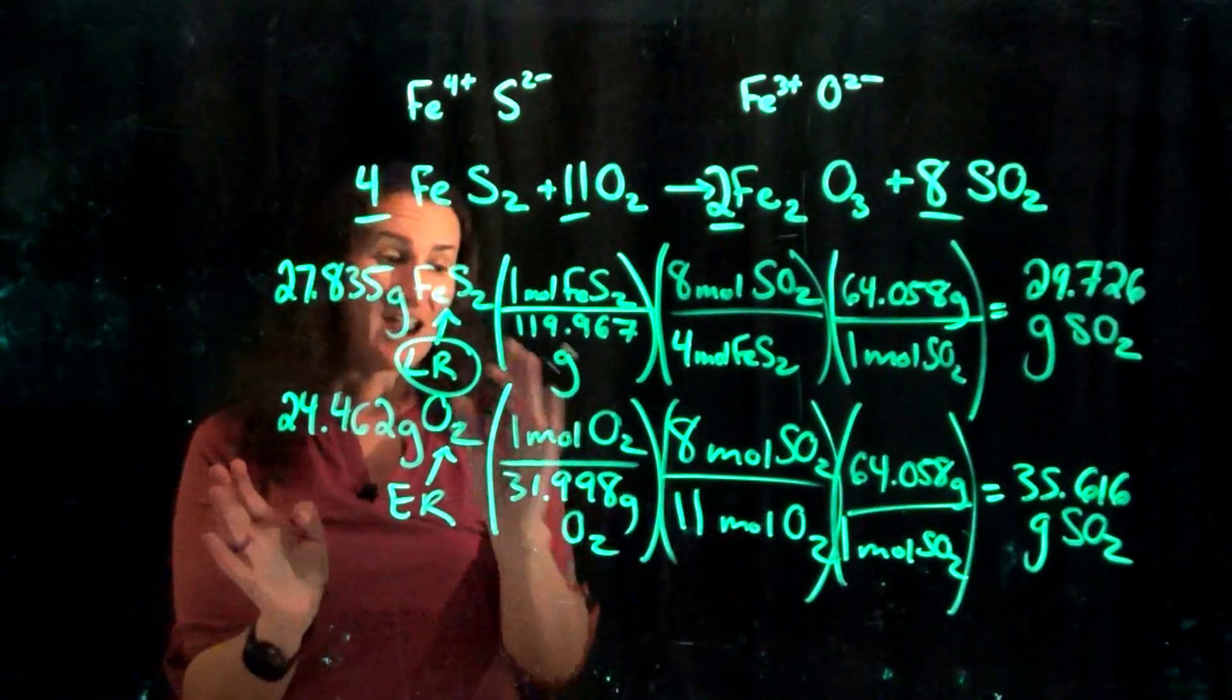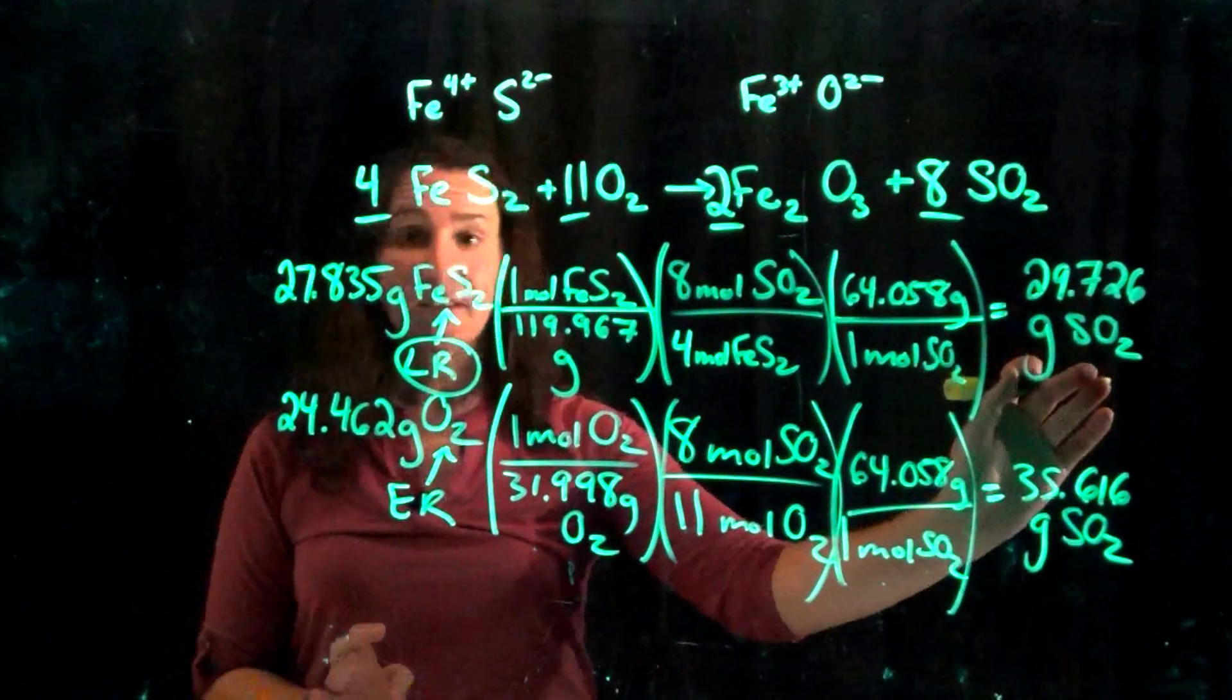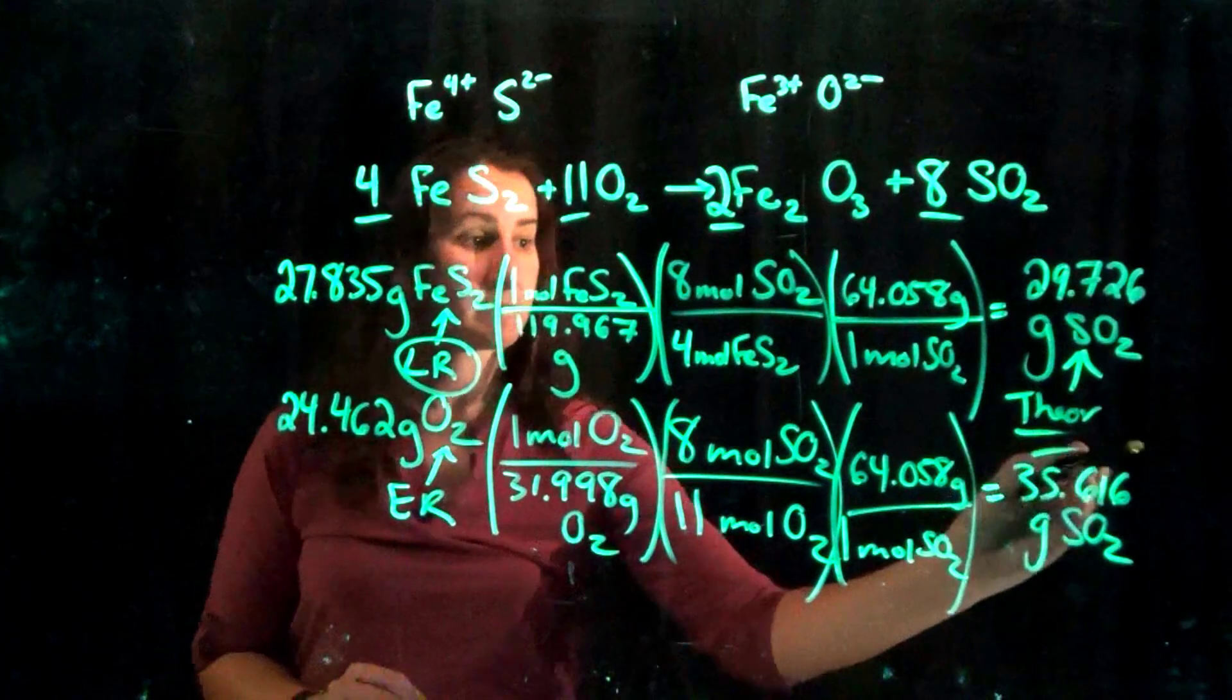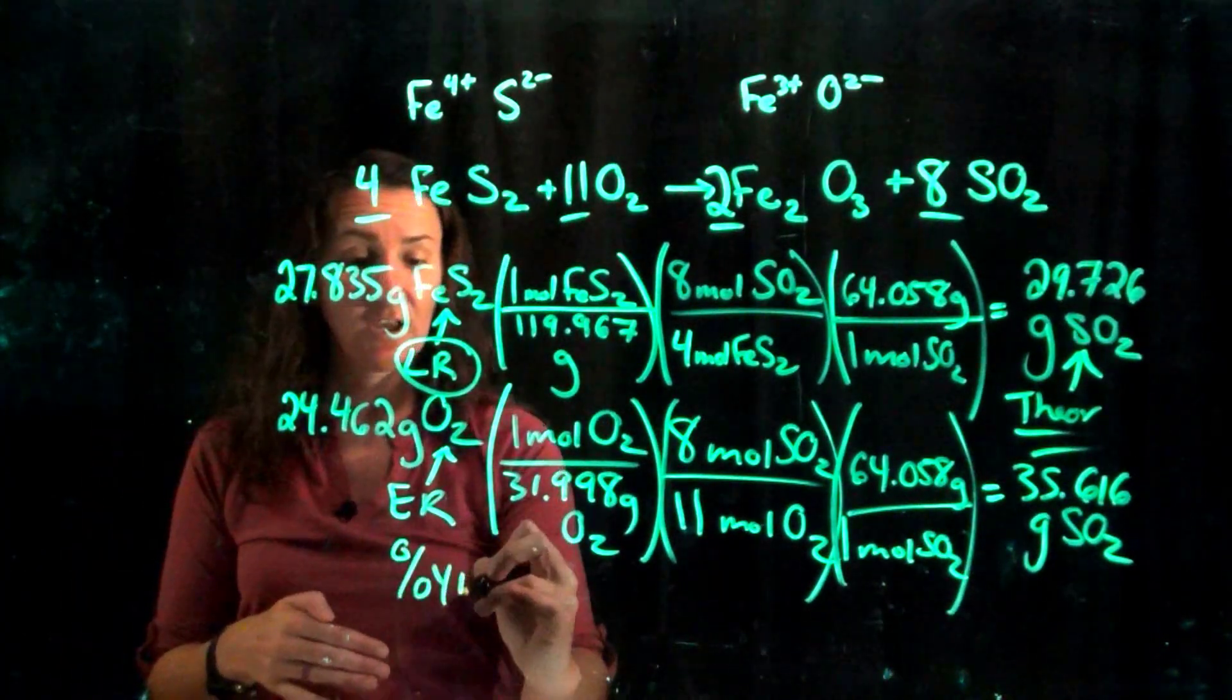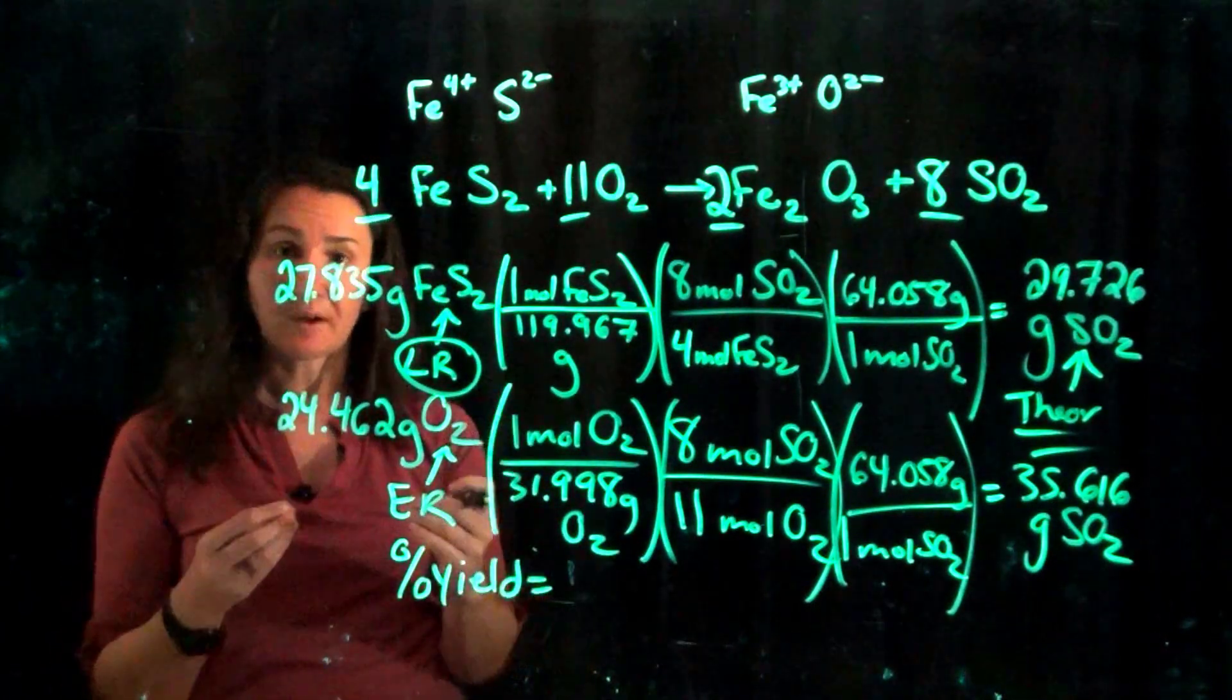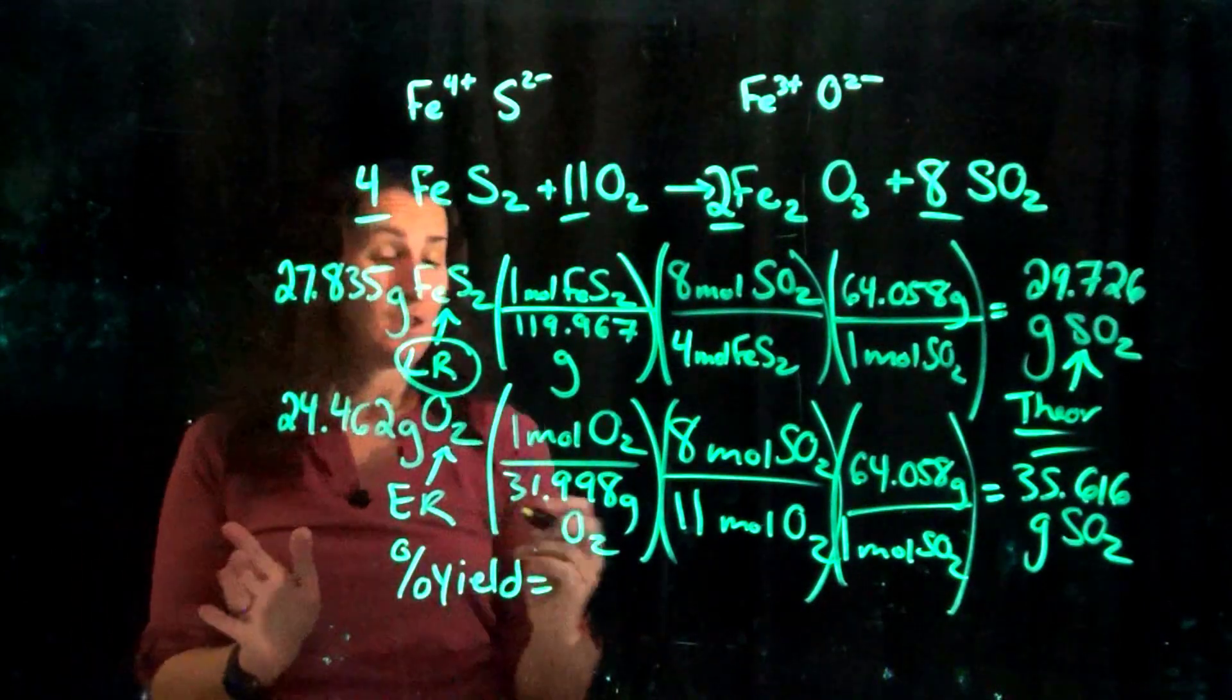I only have enough to produce 29, but I have enough oxygen to produce 29.726, so we're okay. All right, so now that we've done that, we've figured out our limiting reagent, we know this is our theoretical yield. Okay, we can put it into our percent yield equation and get an answer. So percent yield remember equals our actual yield or experimental yield, however you want to term that.